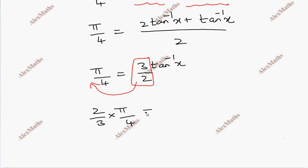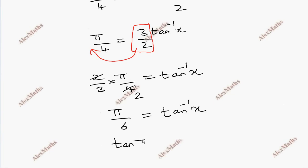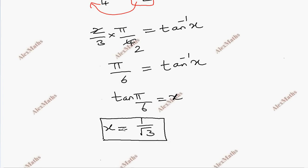Solving, tan inverse x equals pi by 6. Since tan(pi by 6) equals tan 30 degrees which is 1 by root 3, the value of x is 1 by root 3.